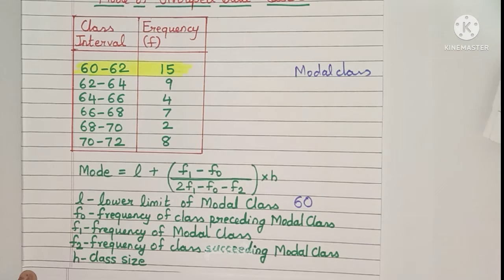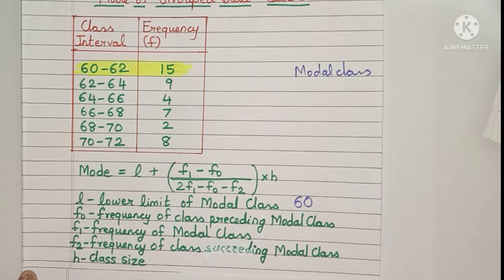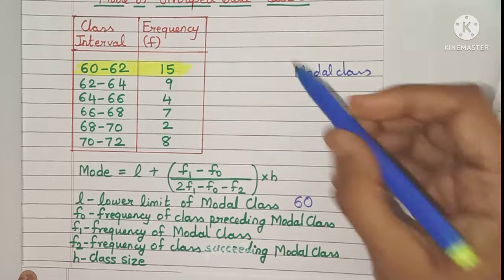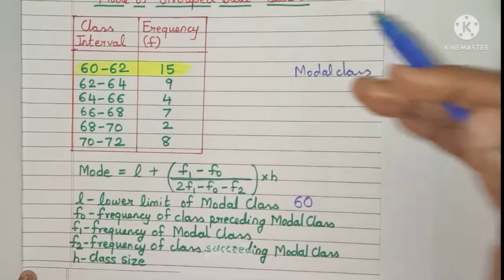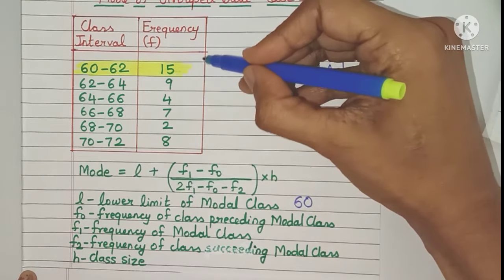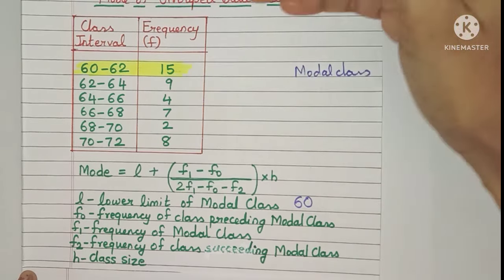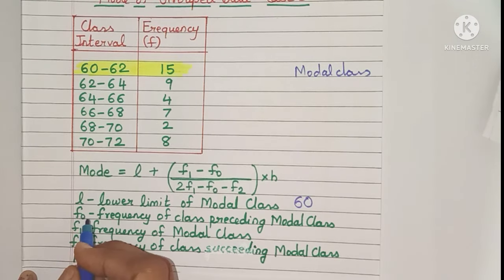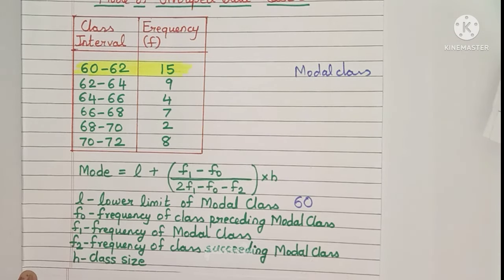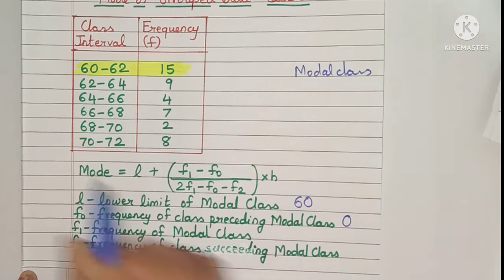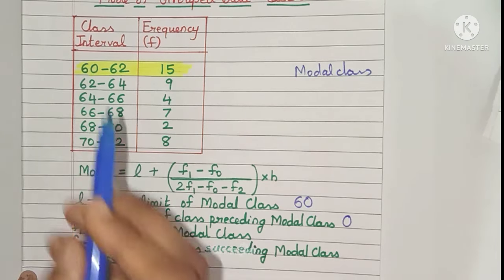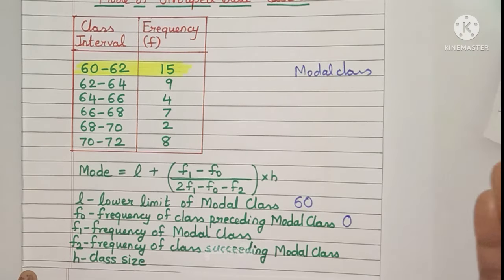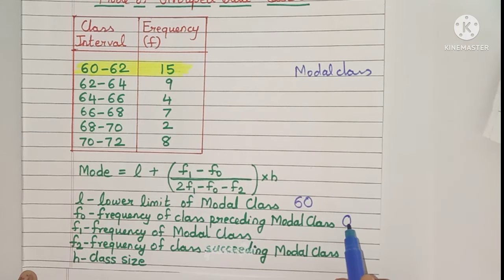F0 is the frequency of the class preceding the modal class. Since the modal class is the first class, there is no class preceding it. So what should you take as F0? In this case, you should take F0 as 0, because there is no class interval before it, so its frequency must also be 0.